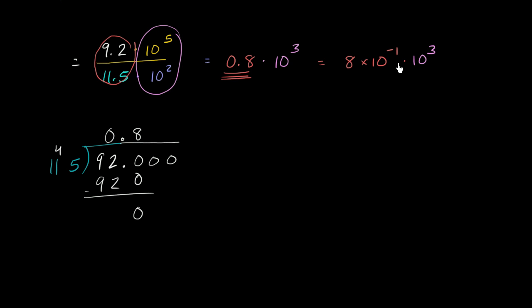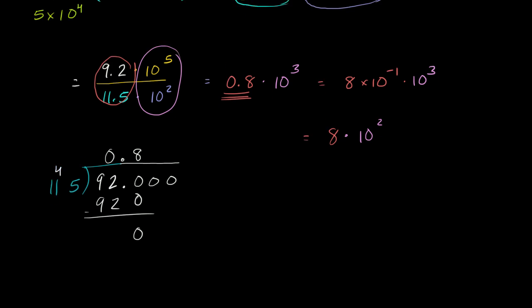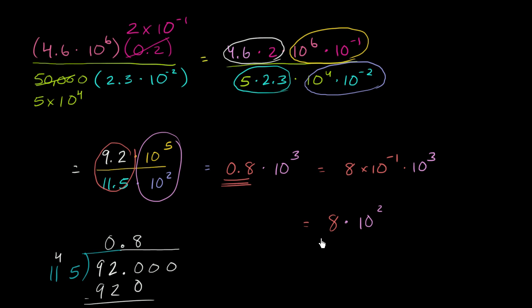And now we have the same base, just add the exponents. So this is going to be equal to 8 times 10 to the 3 minus 1, so 8 times 10 squared. And we're done. We've simplified our original expression.